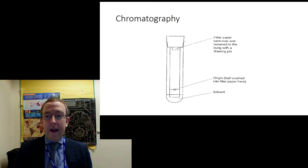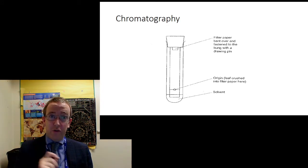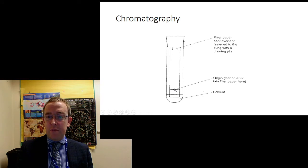One of the things you're often asked is, how do you make sure you can see the pigments? Well, you do it multiple times or put lots of concentrated pigment on there to make sure that you get a nice concentrated spot. Another common question, this line has to be pencil because you don't want ink from your pen running up the paper with the photosynthetic pigments.